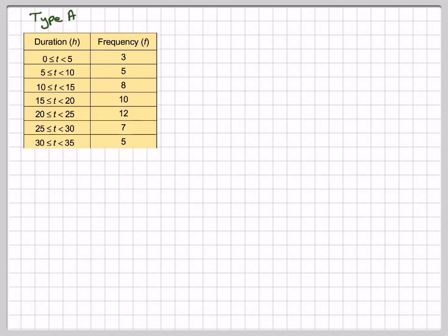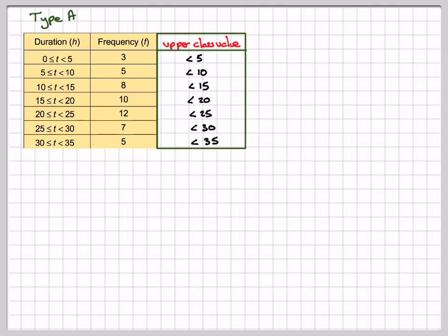So type A, taking the table for type A, what we need to do is calculate and have the upper class values. The upper class value here is 5, although it's not equal to 5. So in here we put less than 5. This one will be less than 10, less than 15, less than 20, less than 25, less than 30, less than 35.